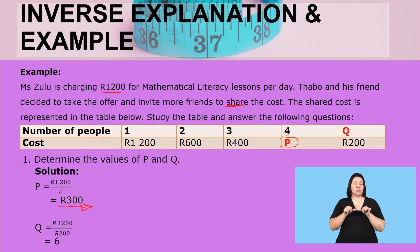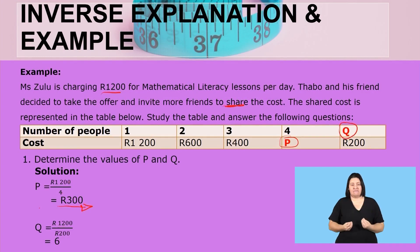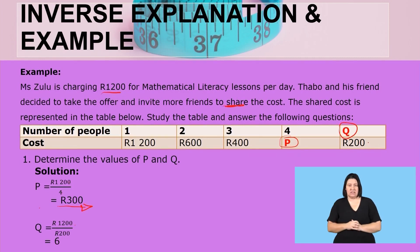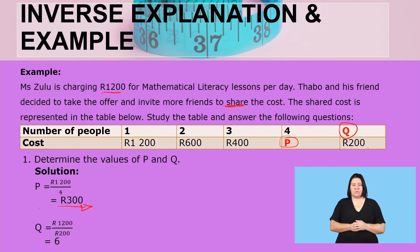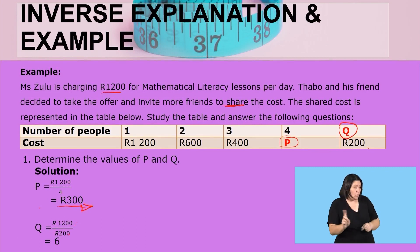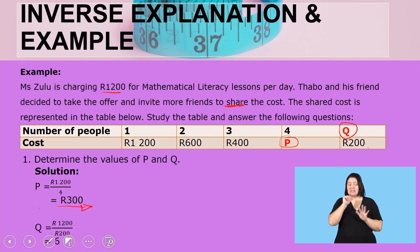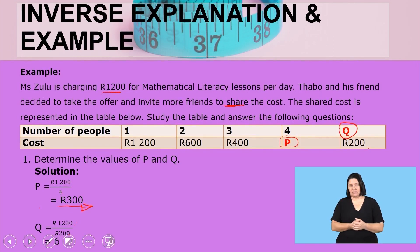Now we continue for the value of Q. We have 1,200 rent as the total cost. We divide it by 200 rent to get how many people will contribute 200 each. So we take 1,200 divided by 200 rent and the answer is six. Therefore, six people will share the cost to contribute 200 rent each.